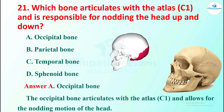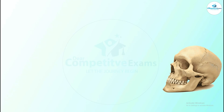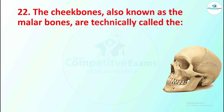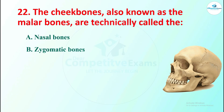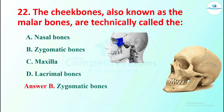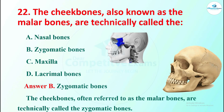Question 22: the cheek bones, also known as the malar bones, are technically called what? Options are nasal bone, zygomatic bones, maxilla, or lacrimal bones. The right answer is zygomatic bones. The cheek bones, often referred to as the malar bones, are technically called zygomatic bones.